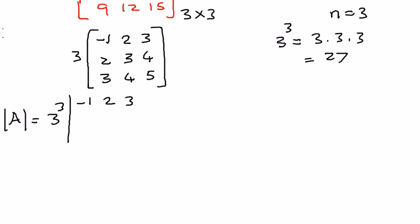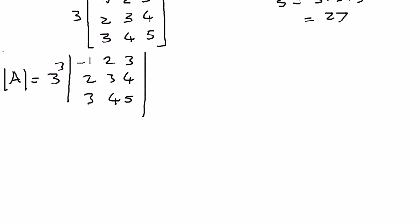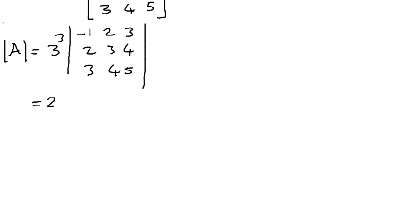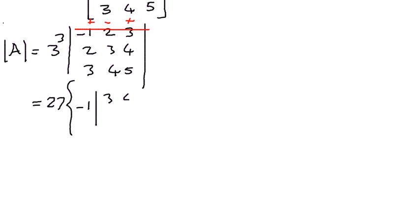The simplified matrix has elements negative 1, 2, 3 in the first row; 2, 3, 4 in the second row; and 3, 4, 5 in the third row. We will expand this determinant by traveling along the first row. According to the sign convention of determinants, the first sign will be positive, the second sign will be negative, and the third sign will be positive.